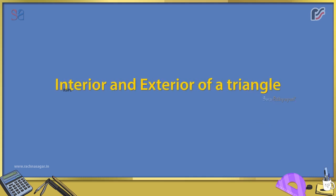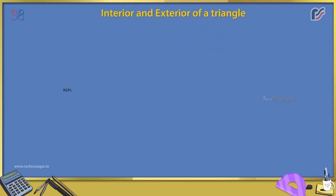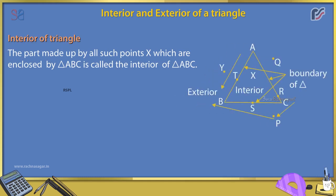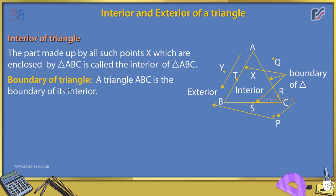Interior and exterior of a triangle. The interior of a triangle is the part made up by all such points X which are enclosed by triangle ABC. The boundary of triangle ABC is the boundary of its interior.